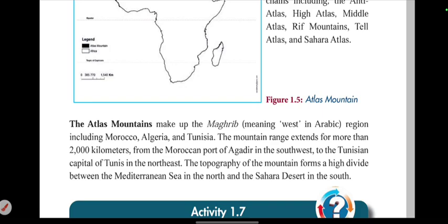The topography of the Atlas Mountains forms a divide between the Mediterranean Sea to the north and the Sahara to the south.